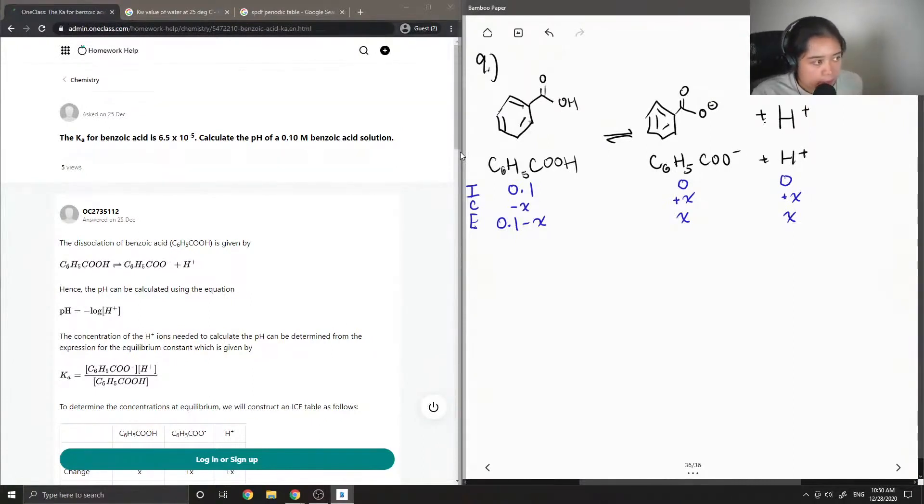Okay, so they give us the Ka value, which is equal to 6.5 times 10 to the negative 5. And the Ka value can also be expressed in terms of the concentrations. So it is the concentration of our products, which is the deprotonated benzoic acid times the concentration of protons in solution divided by the concentration of our reactant, which is benzoic acid.